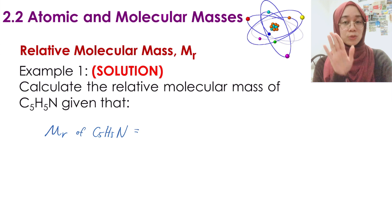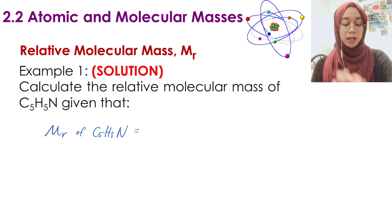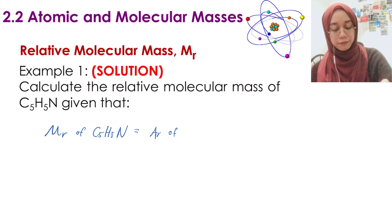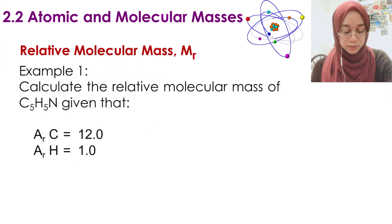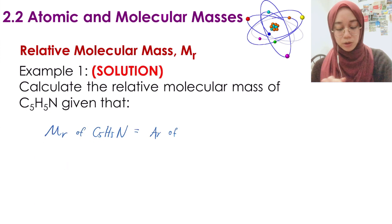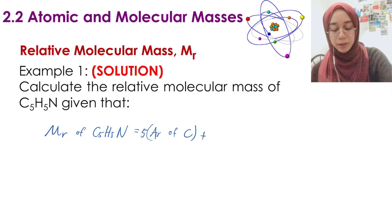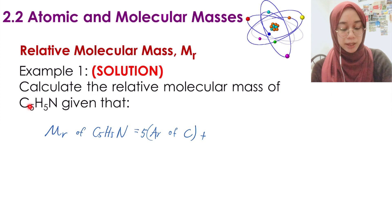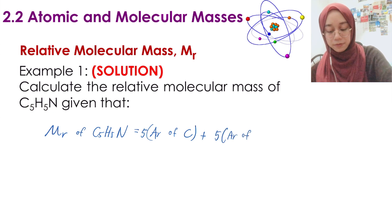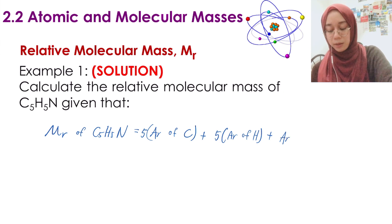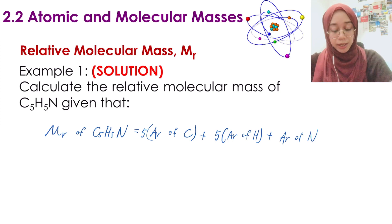Calculating relative molecular mass is actually quite straightforward. The relative molecular mass of a compound is the summation of the relative atomic masses of all atoms in the molecule. There are two methods, but the summation approach is simpler and we'll use that. Let's look at Example 1.